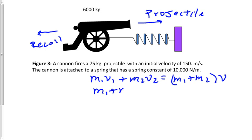So it will look like this: M1 plus M2 times a common velocity equals M1 V1 plus M2 V2.